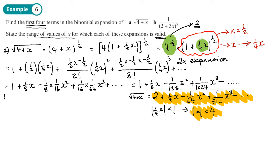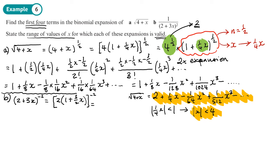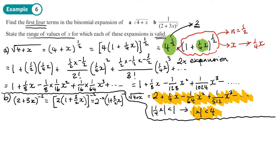Moving on to part B. First, write it in a form with brackets and a power — the power is going to be −2. Since the first number inside the bracket isn't 1, we need to factorize. Taking the 2 out of the bracket gives (1 + (3/2)x)^(−2), all to the power −2. Using the rules of powers, this becomes 2^(−2) times (1 + (3/2)x)^(−2).